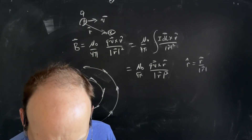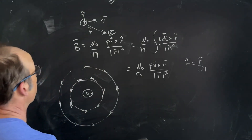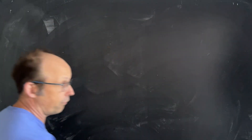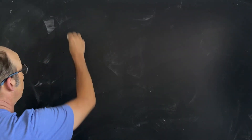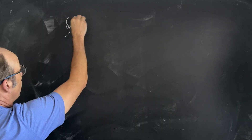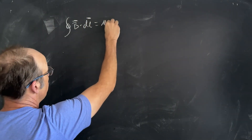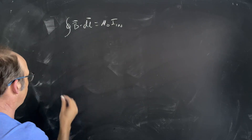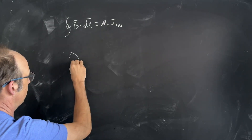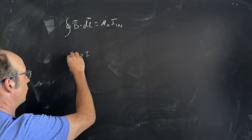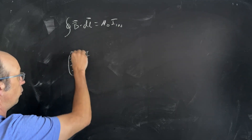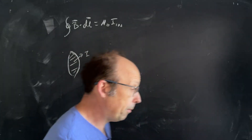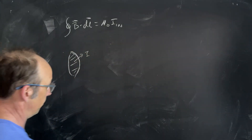Now we have Ampere's law. This is kind of important. Just like we had Gauss's law that was useful to determine the magnitude of the electric field if we know something about the symmetry, we have the same thing for Ampere's law. This says that the integral around a closed path of B dot DL is equal to μ₀ times I_enclosed. Suppose I have some current passing through a region of space and I integrate B dot DL around that loop — it should be μ₀ times that current. It's always true, but it's most useful when you have symmetry.